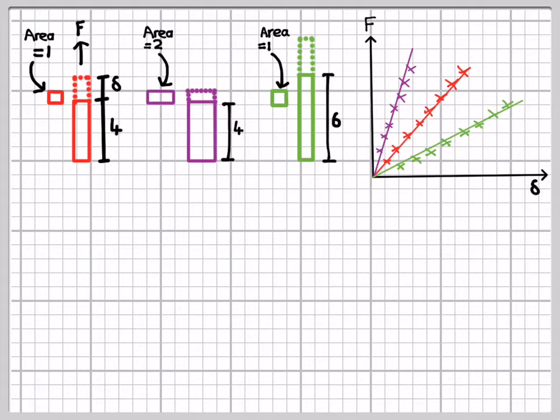So what we're finding is that we're measuring structural properties rather than material properties. So what we want to do is find a means of getting rid of the area and the length of the specimens, so we are recording information that relates just to the material.